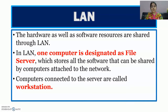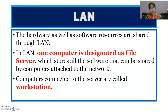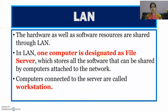In LAN, one computer is designated as a file server. We create one server computer with higher storage capacity and processor. The rest of the systems — clients — can communicate and share data through the server. One computer is designated as file server which stores all the software that can be shared by computers attached to that network.